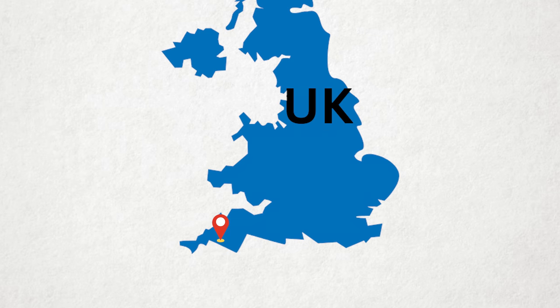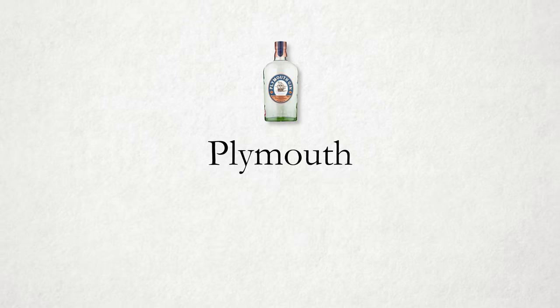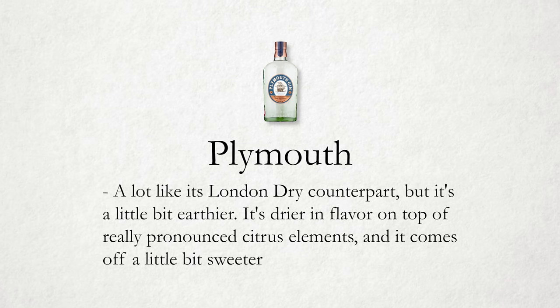Plymouth gin is a style that originated in Plymouth, England, and confusingly can only be made in Plymouth — there's only one brand that makes this style, which is also called Plymouth. Plymouth gin is a lot like its London Dry counterpart, but it's a little bit earthier, drier in flavor, with really pronounced citrus elements, and it comes off a little bit sweeter. It plays really well in the same cocktails as London Dry, and it's definitely worth checking out. It comes in a regular proof and also navy strength.